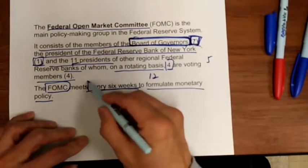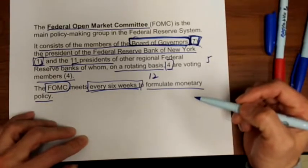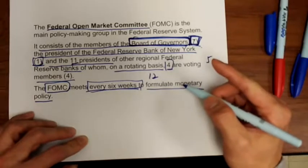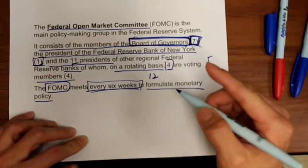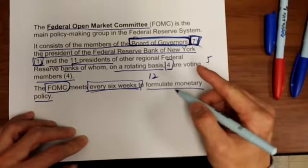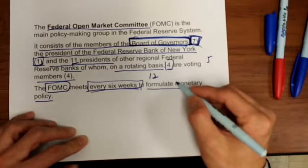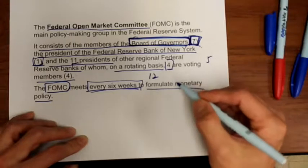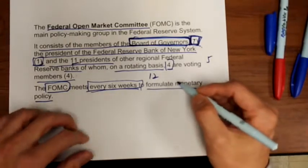Why every six weeks? Why don't they meet every day like Congress? Remember, monetary policy is always for the long run. Therefore, you don't want to change monetary policy too often. You want a stable, consistent monetary policy to control long-run inflation.